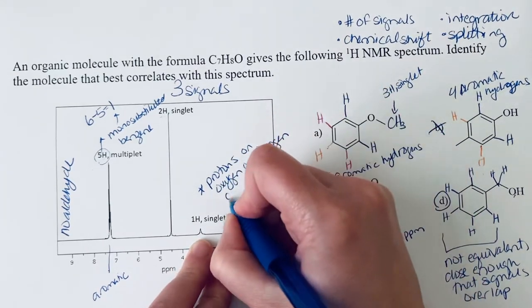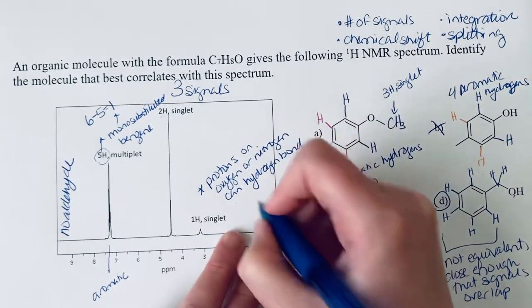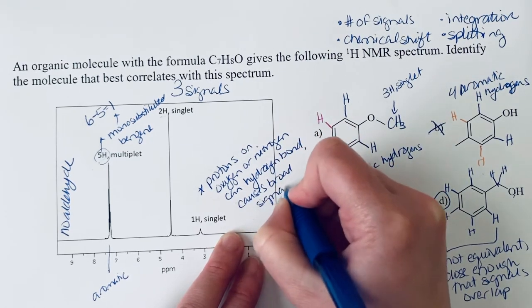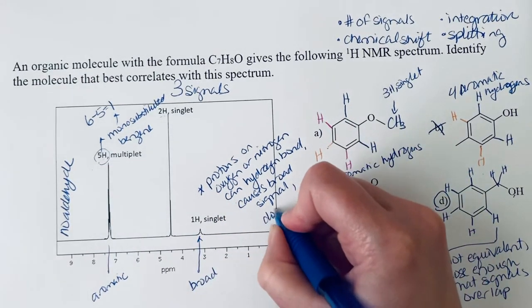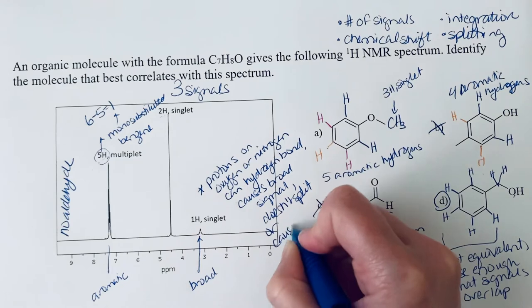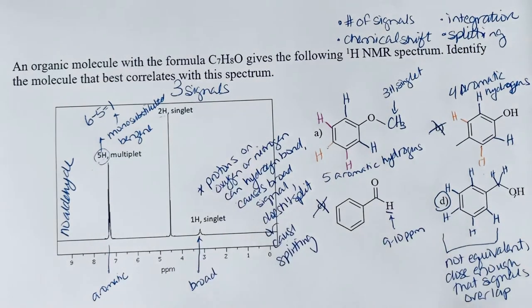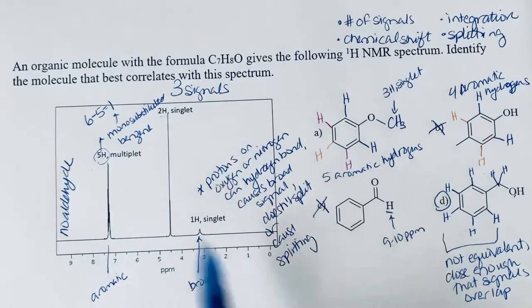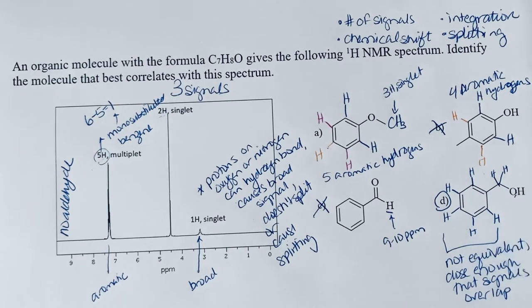And so what that does is it causes a broad signal. And we can see that this is a little bit broad. And it often doesn't split or cause splitting. So that's one reason why both of these are appearing as singlets, even though technically there are neighboring hydrogens. If you were able to prepare this alcohol sample and get it really, really dry, so you didn't have that proton exchange, you might see some splitting here.